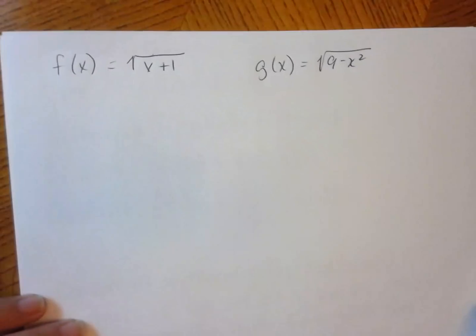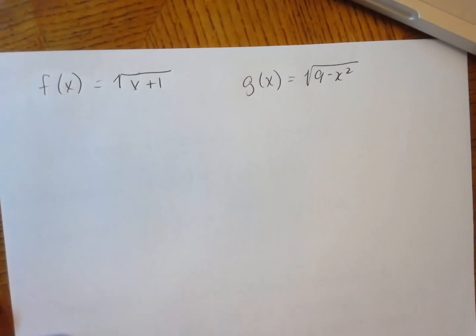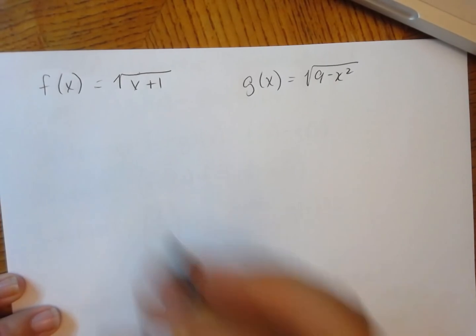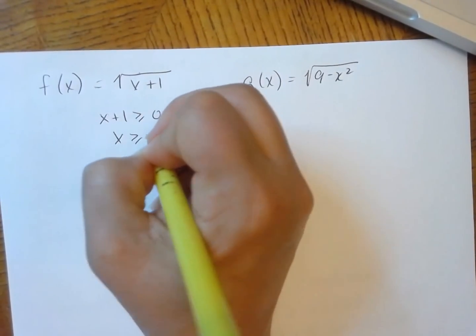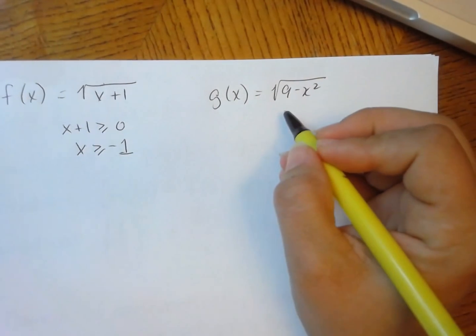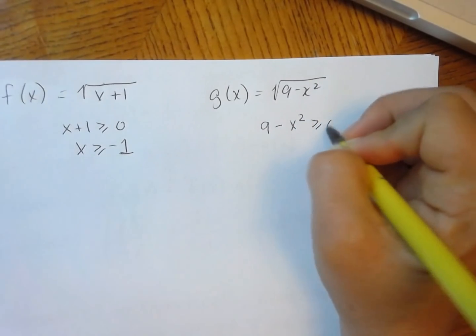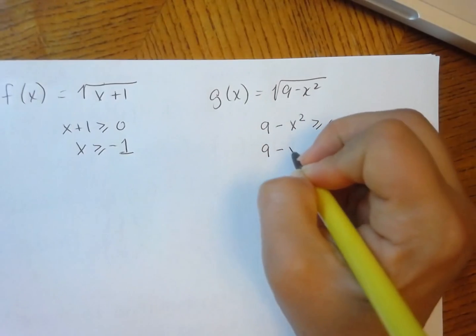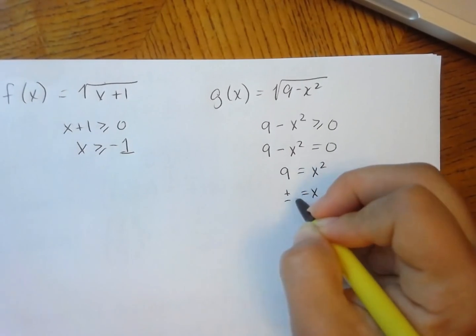Let me do one more example where the domains of f and g are not all real numbers. I'll just do f divided by g. f(x) has a domain restriction — I see a radical, so x + 1 must be greater than or equal to 0, meaning x ≥ −1. g also has a domain restriction: it's a bit more complicated because it has a quadratic underneath. The restriction is 9 − x² ≥ 0. Setting 9 − x² = 0, using the square root method, x = ±3.